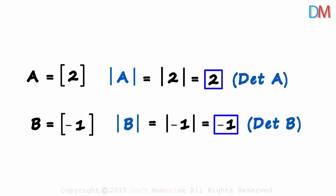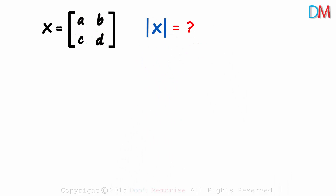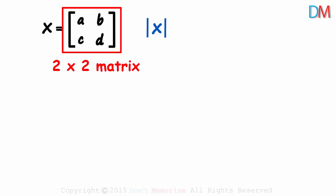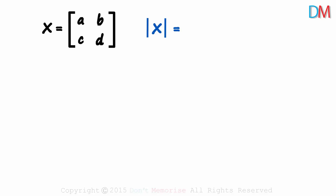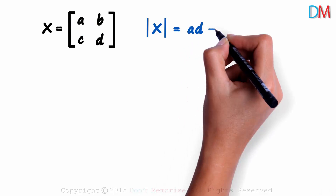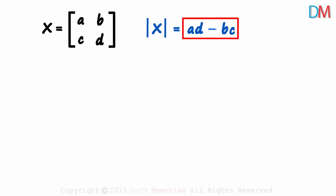Is finding the determinant really that easy? What if it's a 2 by 2 matrix? Matrix X is a 2 by 2 matrix — 2 rows, 2 columns, and 4 elements. The way in which we find the determinant is totally different from the way we find the determinant of a one by one matrix. It will equal the product of these two elements — A times D — minus the product of these two elements — B times C. That is: the 1,1 element times the 2,2 element minus the 1,2 element times the 2,1 element: AD minus BC.